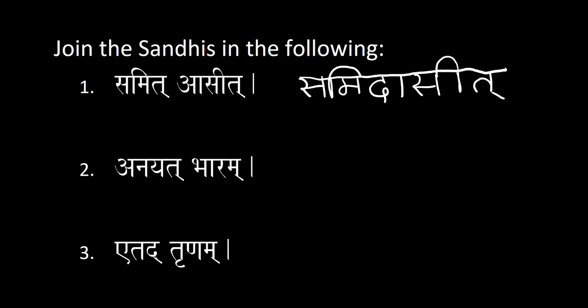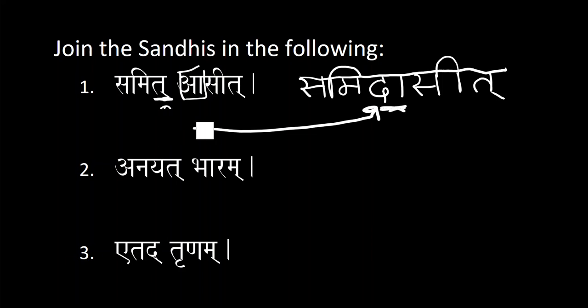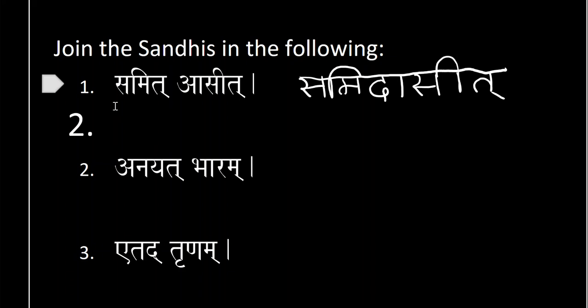The rule is that a final hard consonant becomes soft before a vowel or a soft consonant. So here we have a vowel — this consonant 'ta' in 'samit' is coming before a vowel. So 'ta' is going to change into the soft consonant 'da', with a halant. Merging 'da' and the long 'ā' together gives us 'dā'. So that's how we end up with 'samidāsat' from 'samit āsat'.